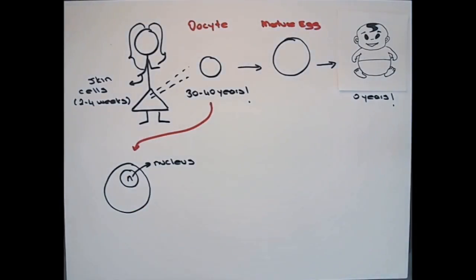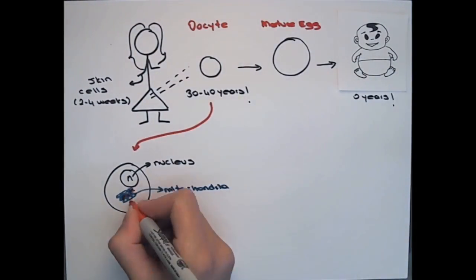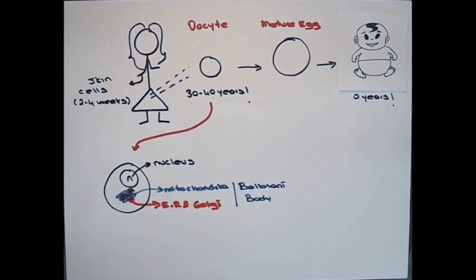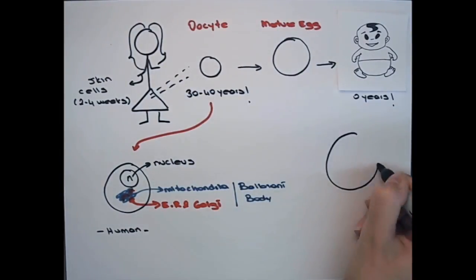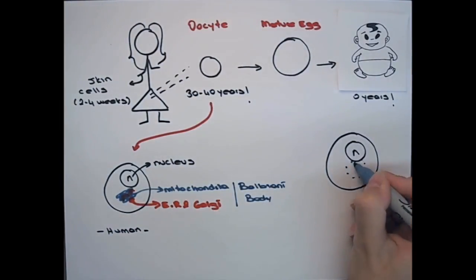To address this question, we study a structure that is present only in dormant oocytes, called the balbionibody. A balbionibody is a group of organelles that is separated from the cytoplasm, but not enclosed by a membrane.